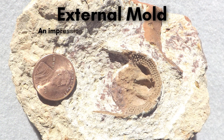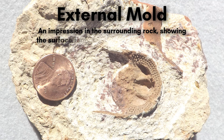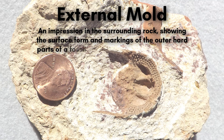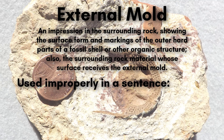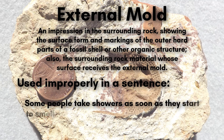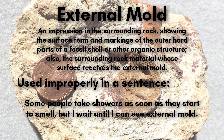External mold. An impression in the surrounding rock showing the surface form and markings of the outer hard parts of a fossil shell or other organic structure. Also, the surrounding rock material whose surface receives the external mold. Some people take showers as soon as they start to smell, but I wait until I can see external mold.